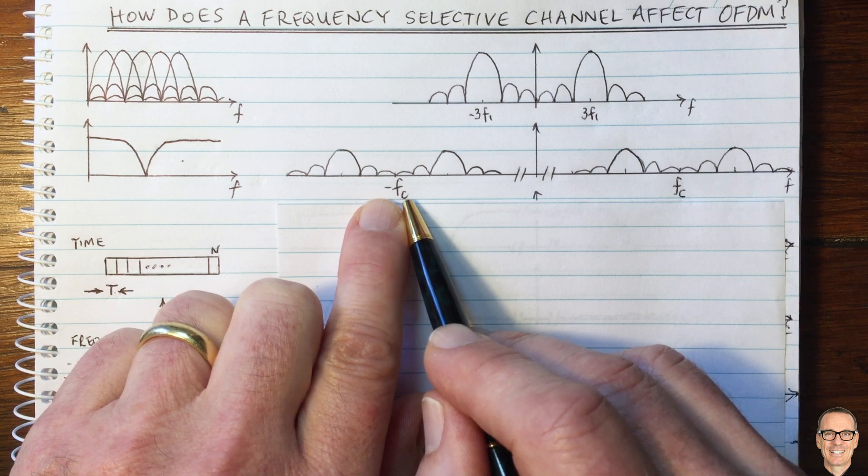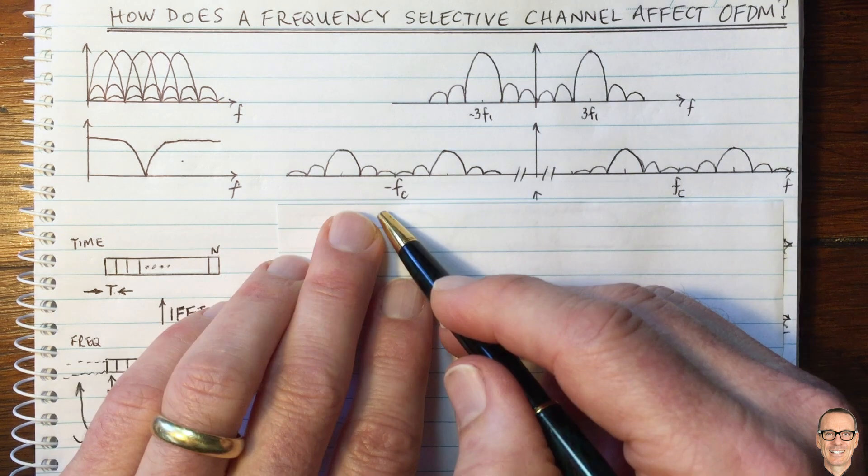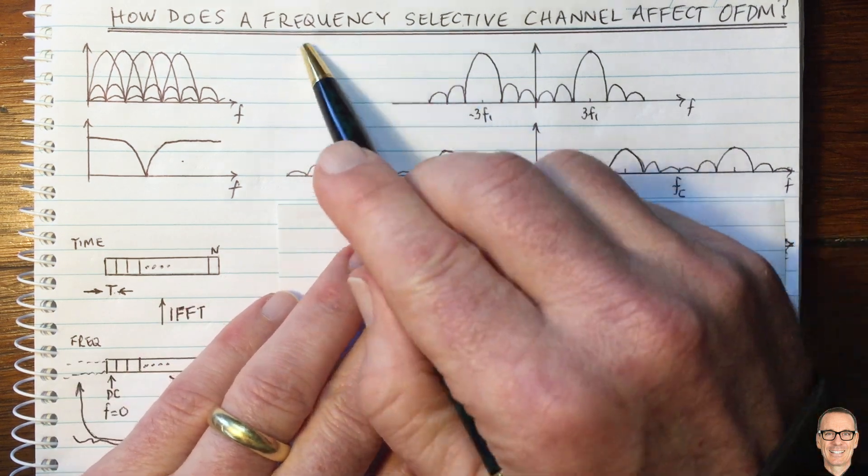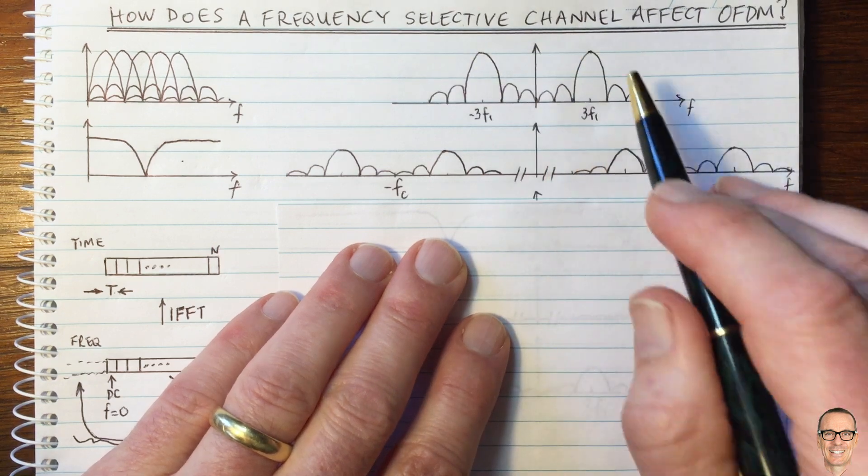So this function here will be shifted up and appearing centered at the carrier frequency FC and the negative carrier frequency, negative FC, from the cos function. So now let's think about the frequency selective channel in the pass band,